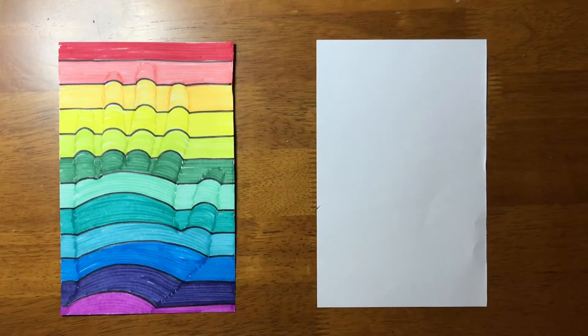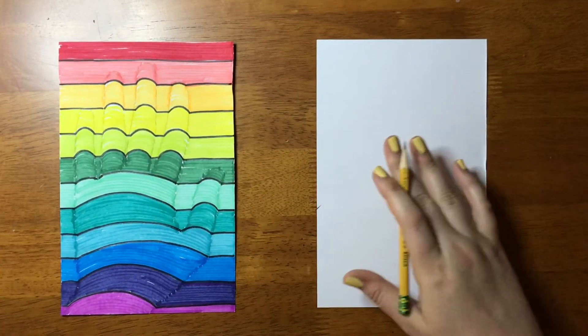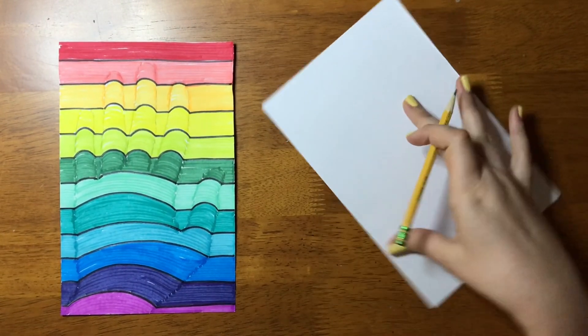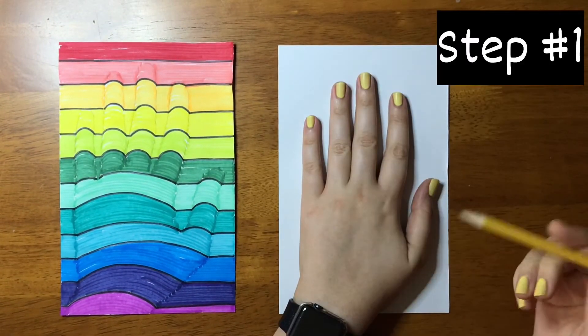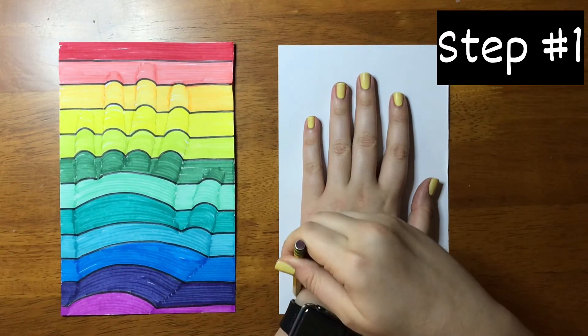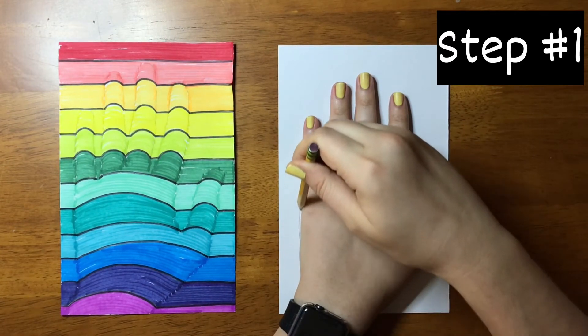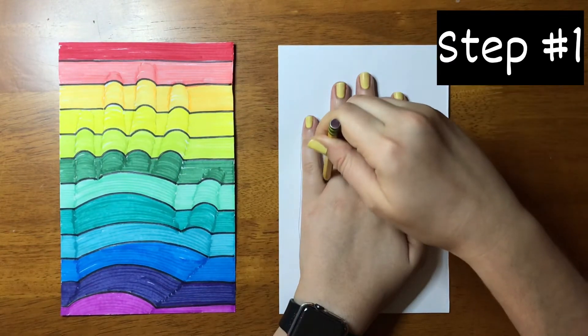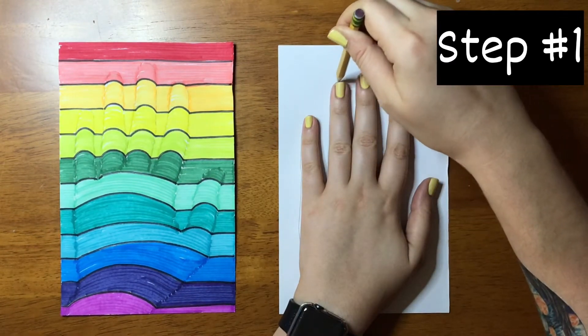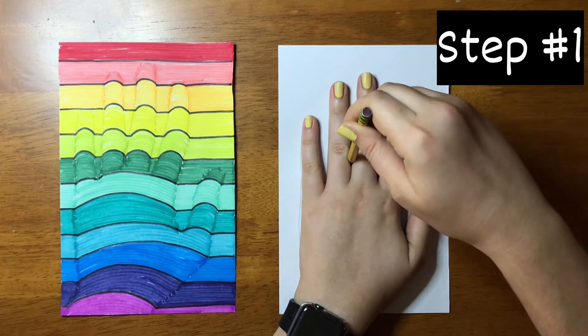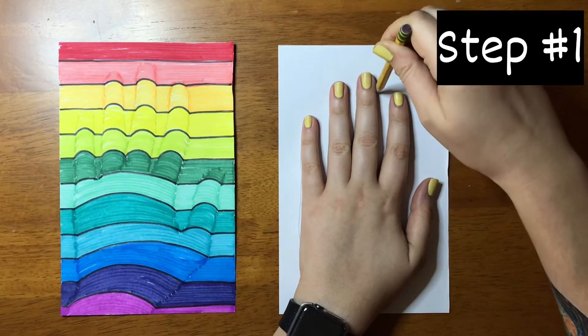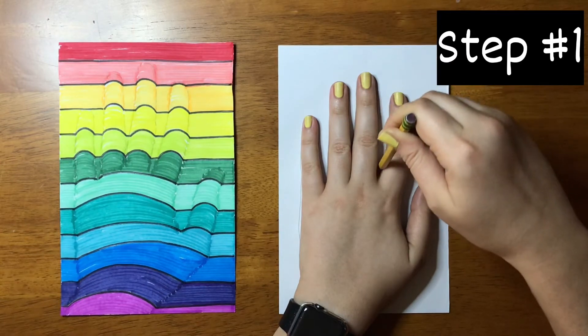The first step of our optical illusion hand is to make sure our paper is vertical, not horizontal. Once you have your hand on your paper, you are going to carefully and slowly trace around your hand. You don't want to go too fast because our hand will look all wobbly, but we don't want to go too slow because we only have a certain amount of time in class to work on this.